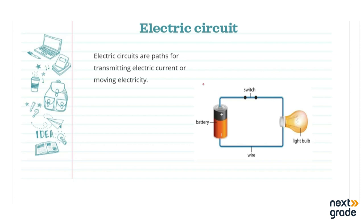How does electricity work? We will study this using a simple electric circuit. Electric circuits are paths for transmitting electric current or moving electricity. Such circuits allow electricity to be used to provide power to light appliances and many other devices. You can also write 'transmitting' as 'transfer' if that is easier.